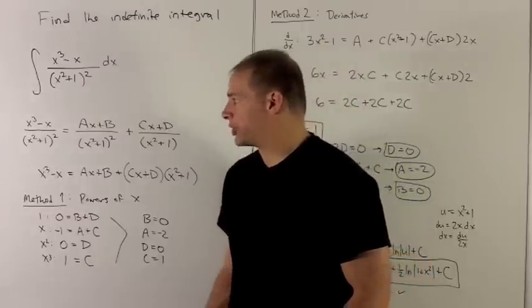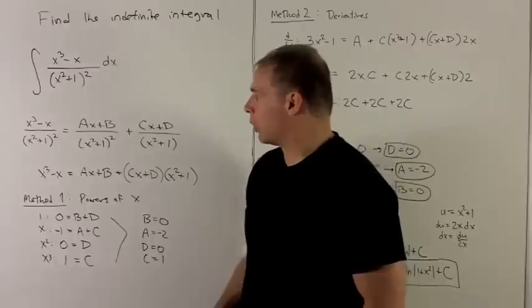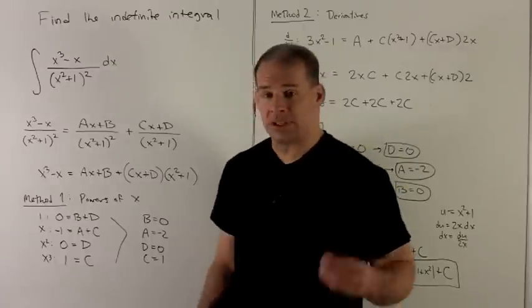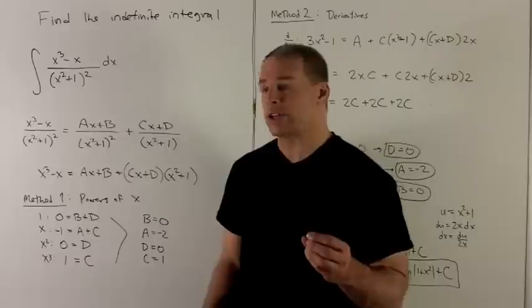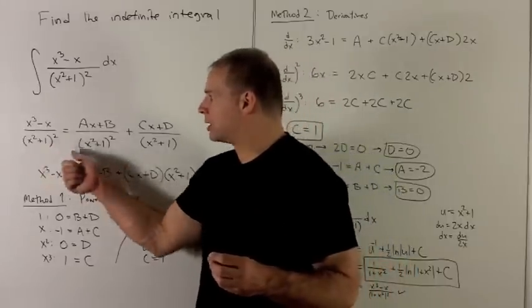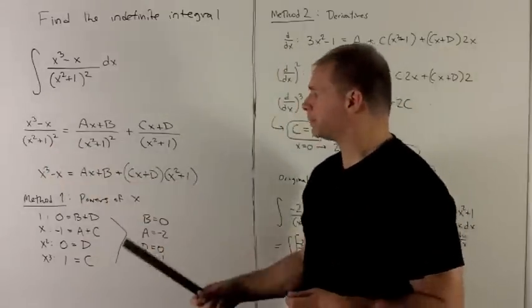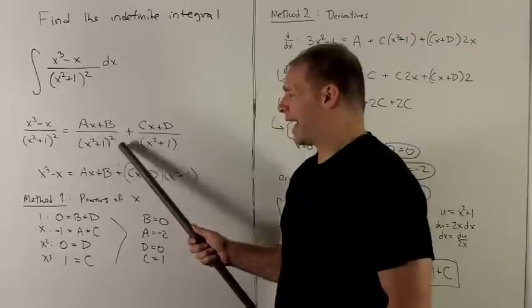So we proceed as usual. The rule here is going to be, same as with the multiple linear factors, if I have a power on top of my x squared plus 1, I'm going to use the highest power, and then I have to put a term in for all lower powers.